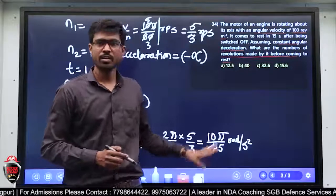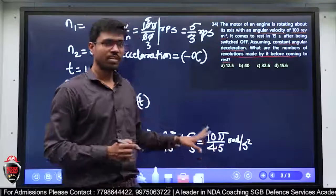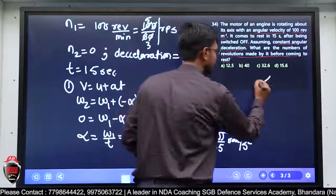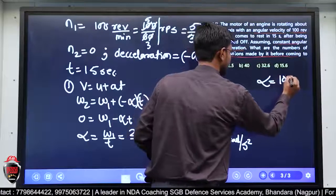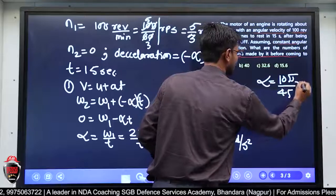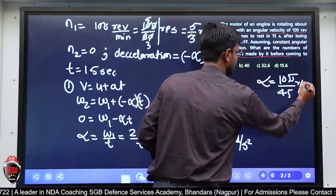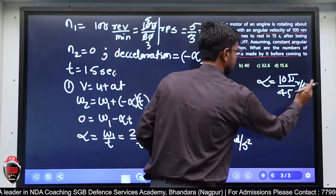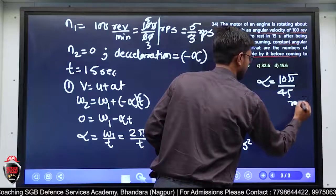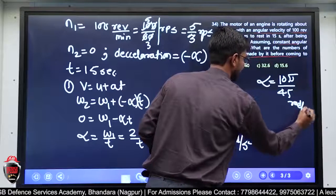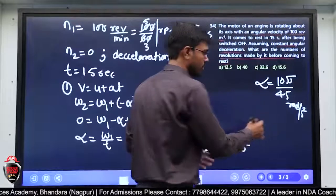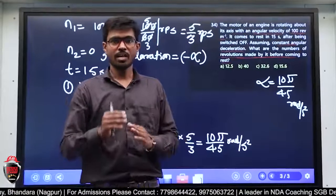Solving करने पर alpha = 10π/45 radian per second square मिल गया।